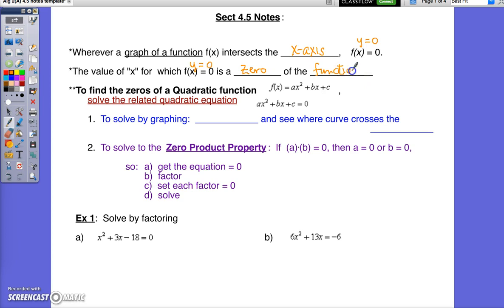To find the values of these zeros of our quadratic function, ax squared plus bx plus c, we will solve this related quadratic equation: ax squared plus bx plus c equals 0. And in Section 4.5, we're going to solve a couple different ways.